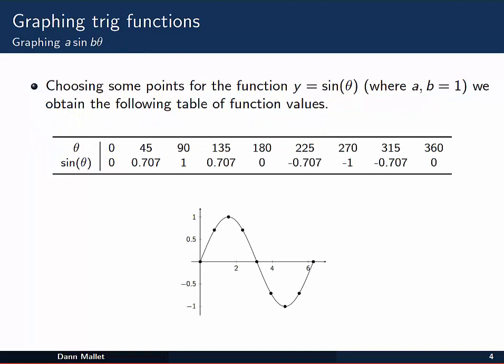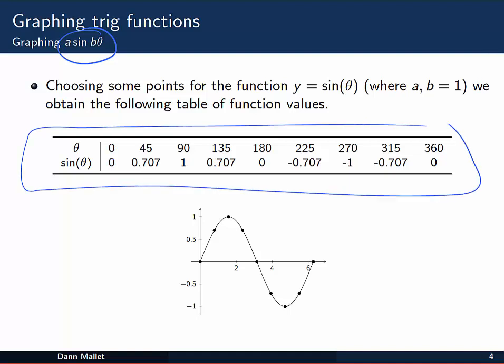What we actually want to get towards is graphing a constant a multiplied by sine of b times theta. Let's have a look at sine of theta. I'm going to choose some points for the function y equals sine theta. In this case, the a and the b are just equal to 1. So we get this table of coordinate pairs: 0 and 0, 45 and 0.707, and so on. You can see those plotted here on the Cartesian plane, and again, this sinusoidal shaped curve.